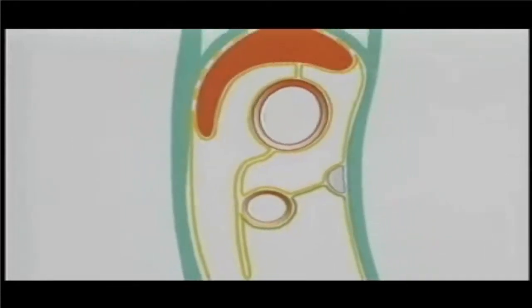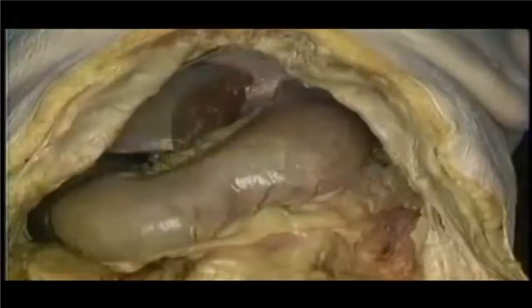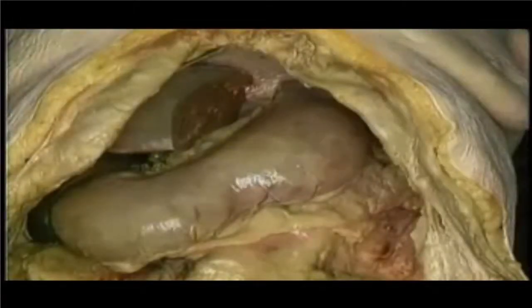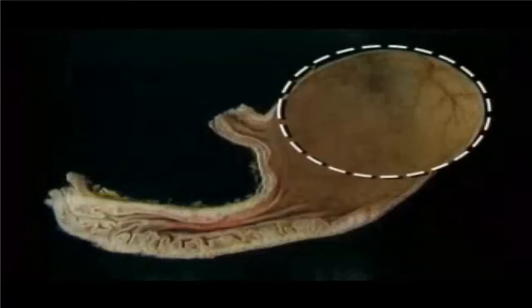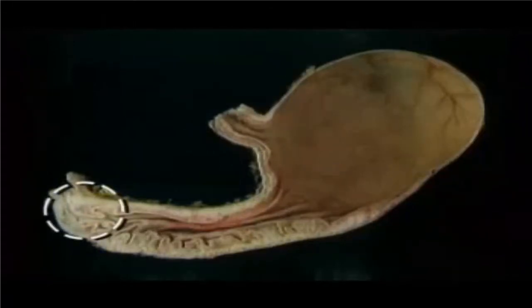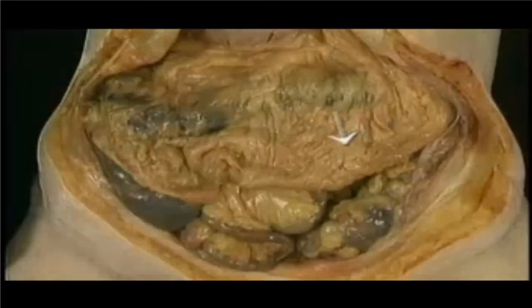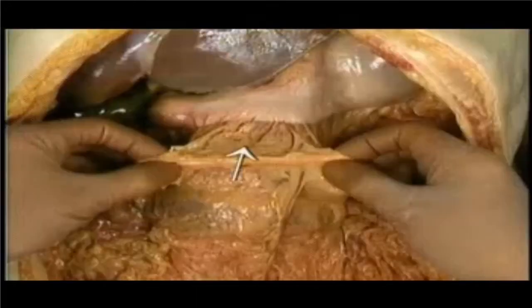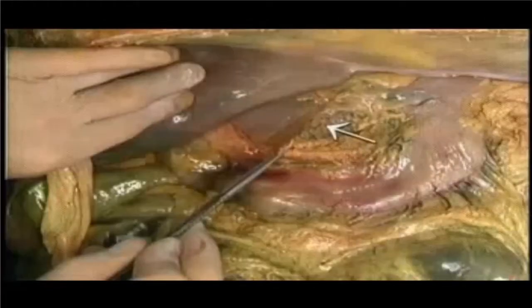We're left with the greater omentum stuck to the transverse colon and hanging down below it. The lesser sac lies behind the lesser omentum, the stomach, and this part of the greater omentum — the gastrocolic ligament. Here's the stomach with its greater curve and lesser curve, the esophagogastric junction, the fundus, the pylorus, and the pyloric antrum. Here's the dependent greater omentum, the gastrocolic ligament, the gastrosplenic ligament, the lesser omentum, and the epiploic foramen.